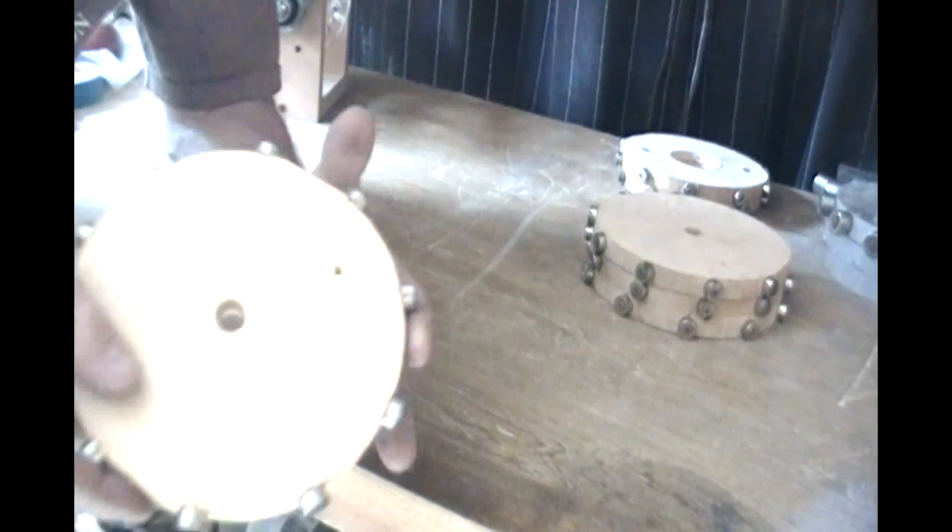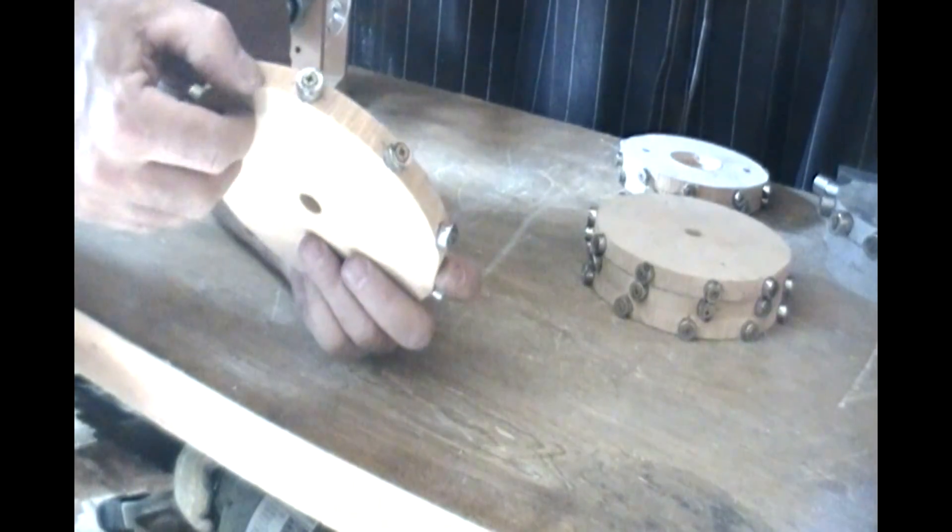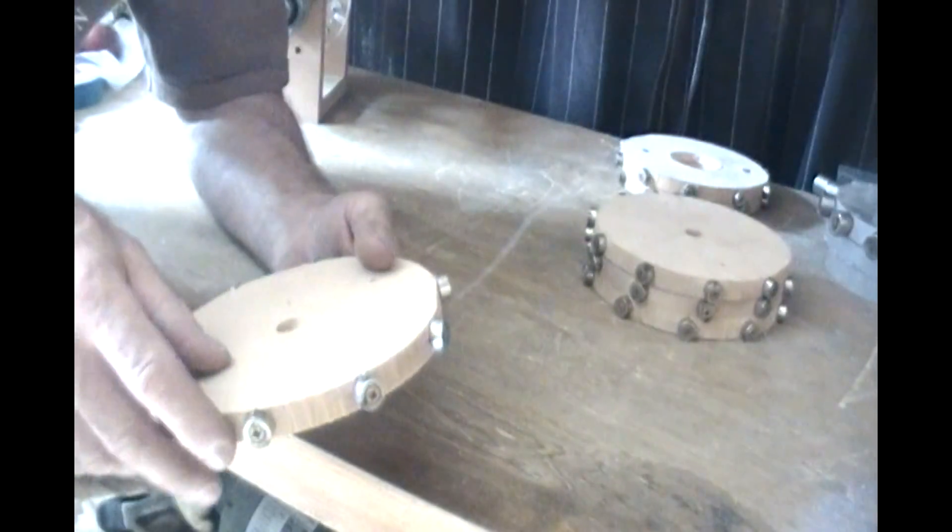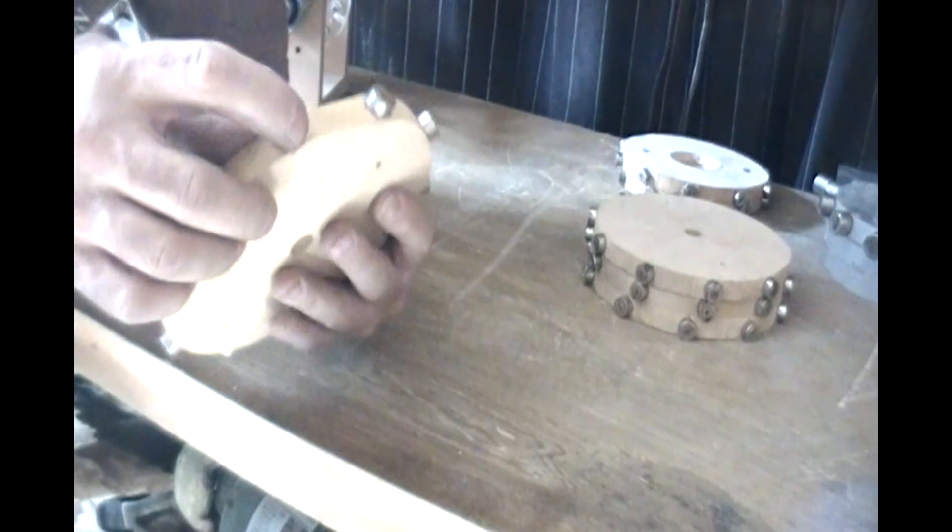I started out with just a small rotor cut out of MDF, half-inch thick, and about six inches in diameter. I put small half-inch diameter, quarter-inch thick neodymium magnets around the edge.